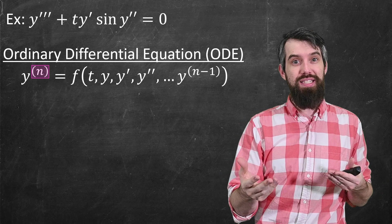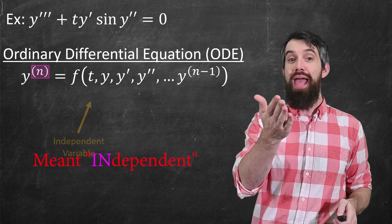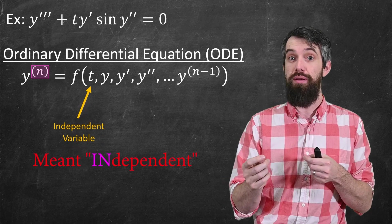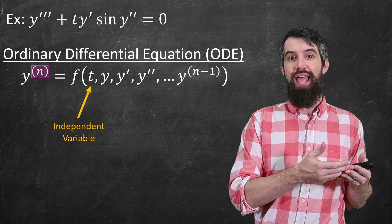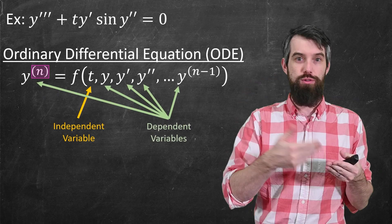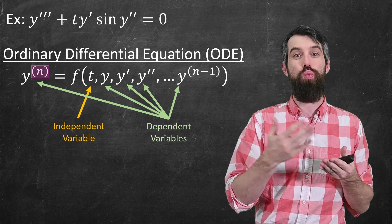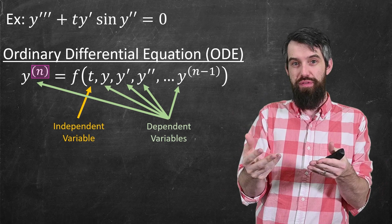And then on the right-hand side, I have some relationship, some function that I haven't specified, between an independent variable that I'll call t, sometimes x, and a dependent variable y and its derivatives, y prime, y double prime, all the way potentially up to y to the n minus 1th derivative.